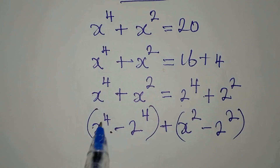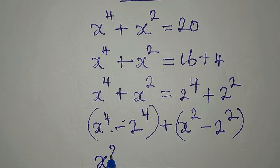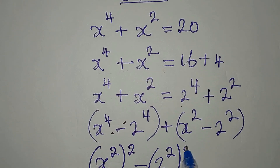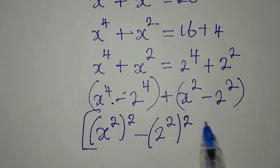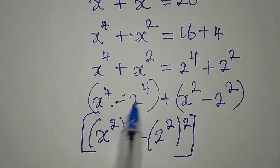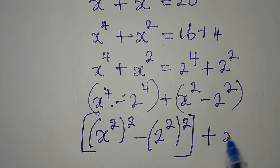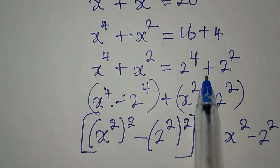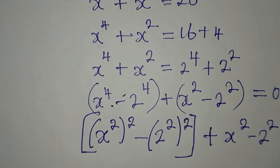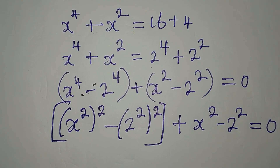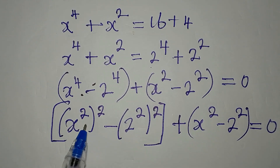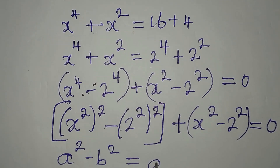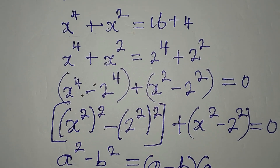Now I can break what I have here. So I have x squared, squared minus 2 squared, squared — which you can place in square brackets. This is the same as what we have. Then we have plus x squared minus 2 squared, and everything is equal to 0, since we brought everything from the right to the left. We are still applying the difference of two squares. You know your a squared minus b squared is the same thing as a minus b times a plus b.